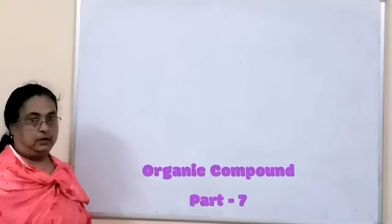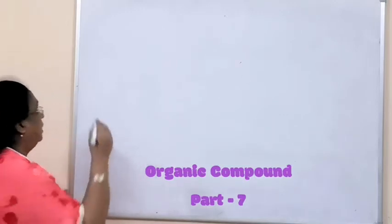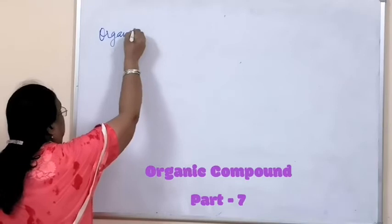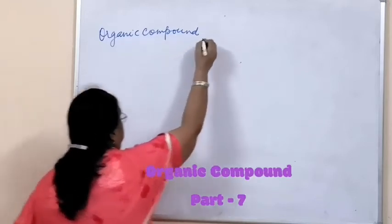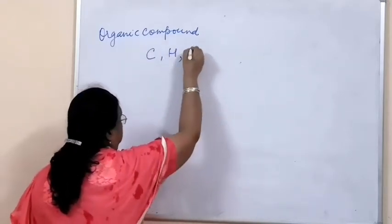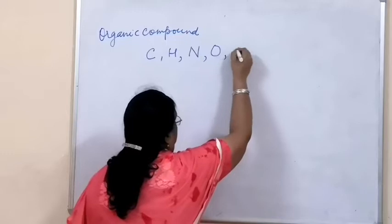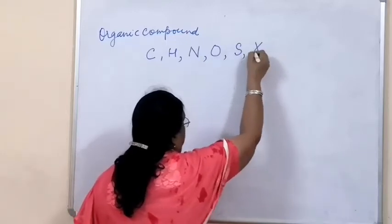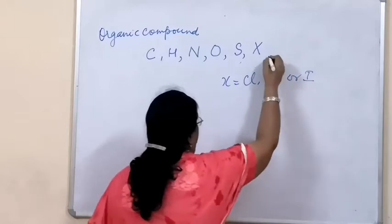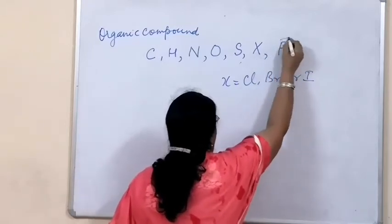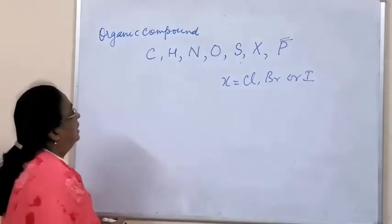Today we will do detection of elements in organic compounds. Organic compounds consist of carbon, hydrogen, nitrogen, oxygen, sulfur, and halogens. In halogens, X includes fluorine, bromine, iodine, and also phosphorus — though phosphorus is not mentioned in your syllabus, so detection of the remaining elements will be covered.